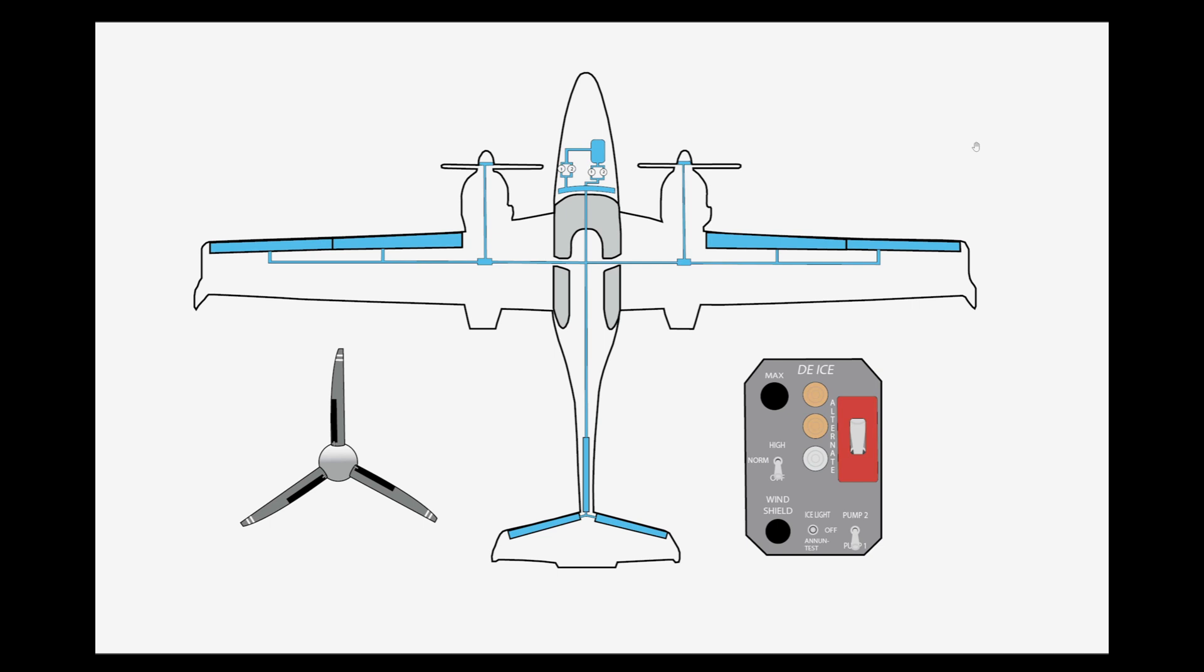The de-ice system for the Twin Star uses de-ice fluid and a weeping wing system as well as some other components. It uses this glycol-based de-icing fluid that is stored in a tank in the nose of the airplane. If you open the right nose door, you'll see the tank. It uses a number of electric pumps to distribute the glycol fluid around the airplane, and it's all controllable from a panel in the cockpit.